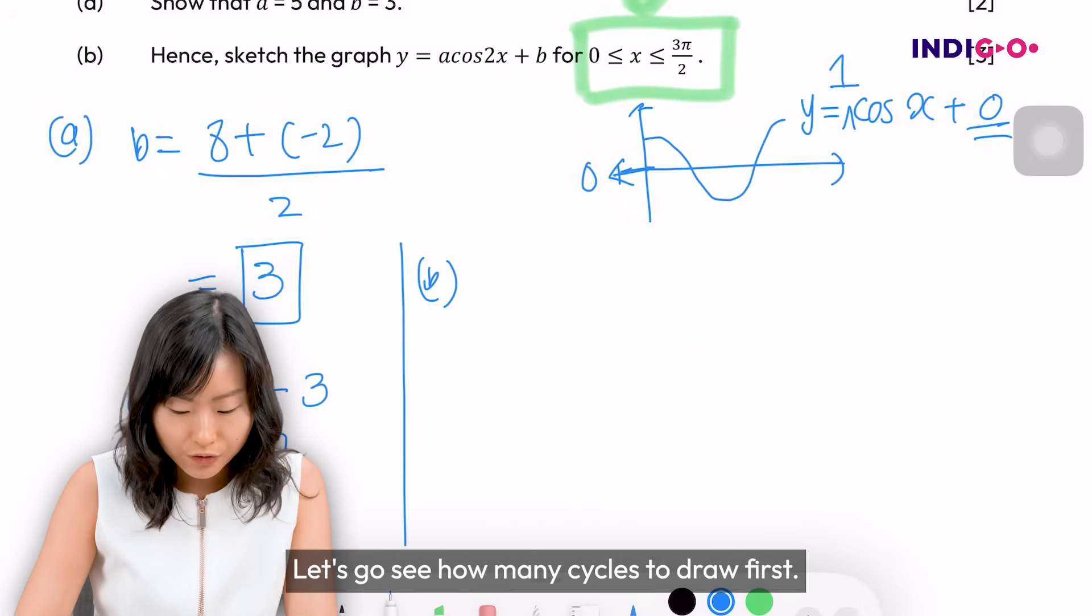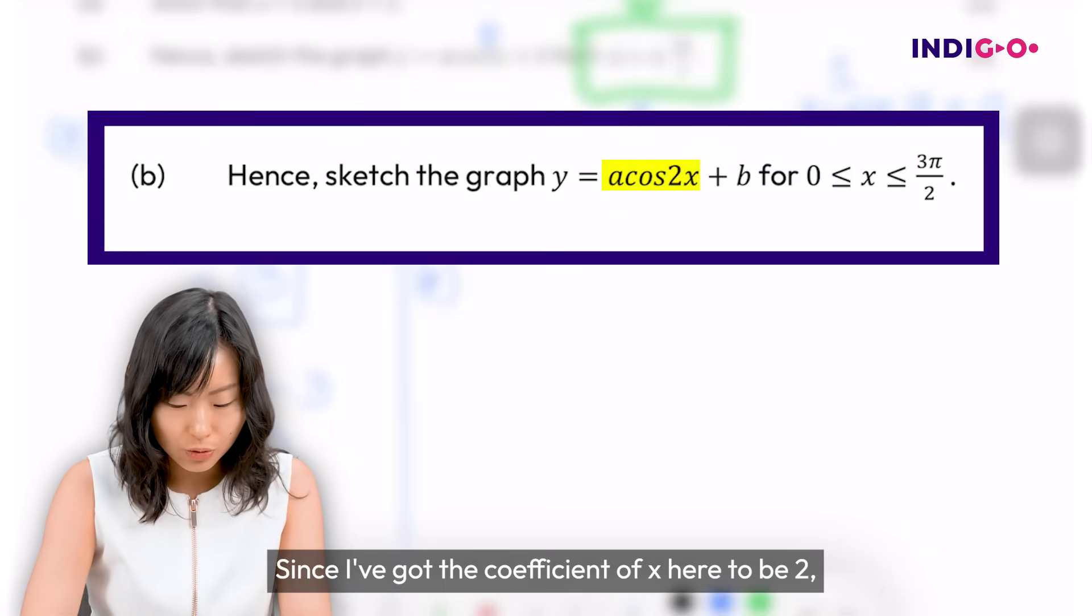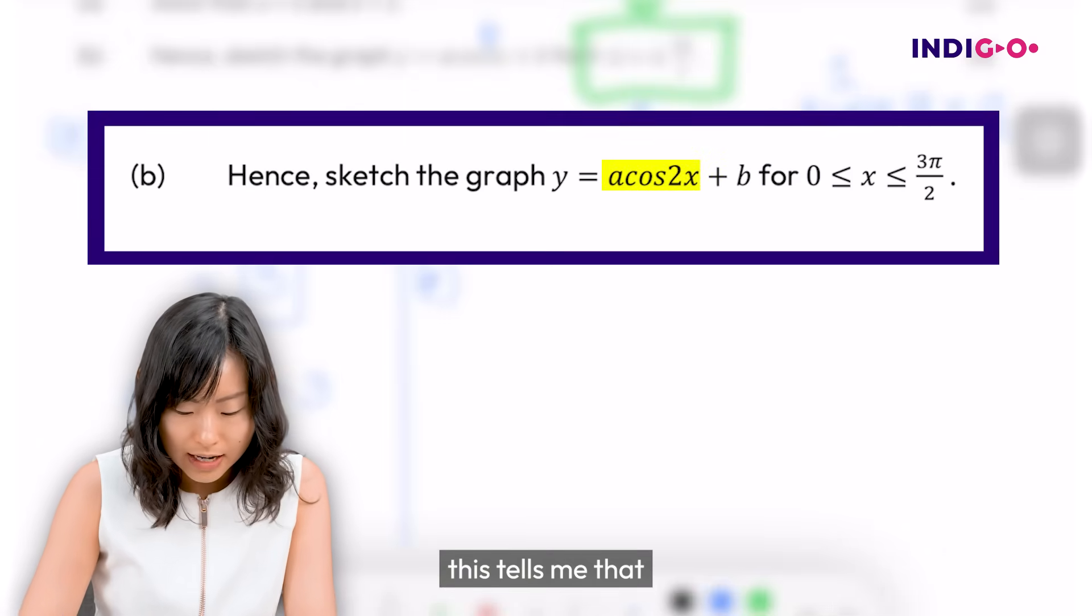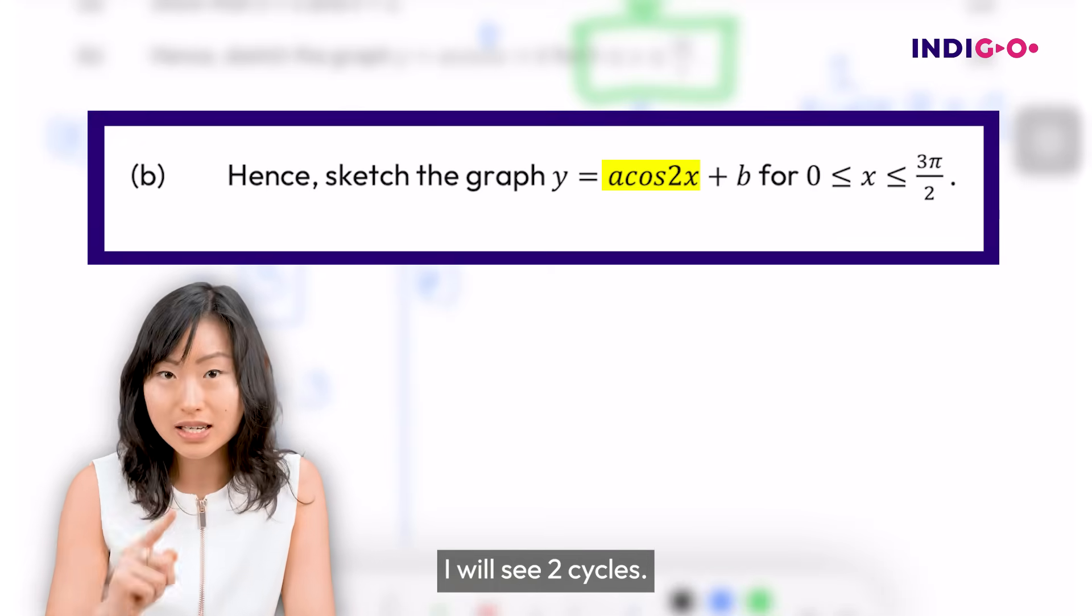Let's see how many cycles to draw first. Since I've got the coefficient of x here to be 2, this tells me that in 360 degrees or in 2π, I will see 2 cycles.